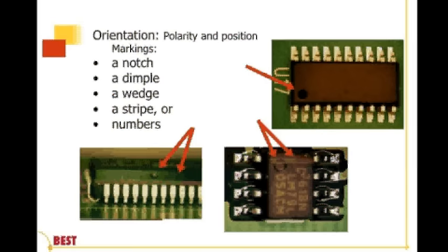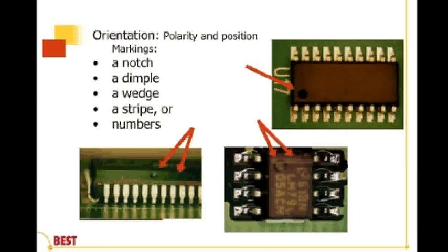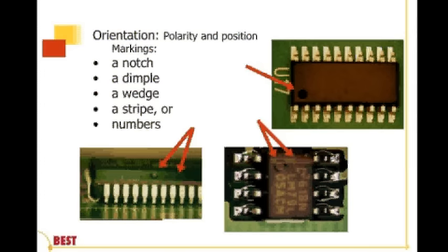On integrated circuits, we need to know whether or not the orientation is correct on these parts. We see here in the upper left that U17 has an arrow pointing to a little dimple — that dimple refers to a reference pin designation. Located on the silkscreen — the numbers and letters defining where the component goes — that would line up with the dimple to determine if it's oriented correctly. The orientation shows up in a variety of fashions: either notches, dimples, wedges, stripes, or even numbers.